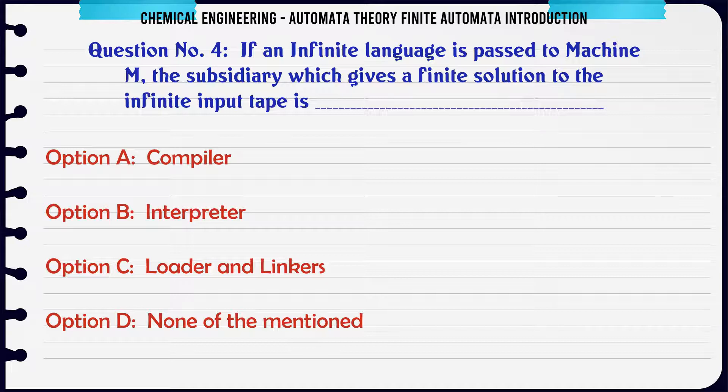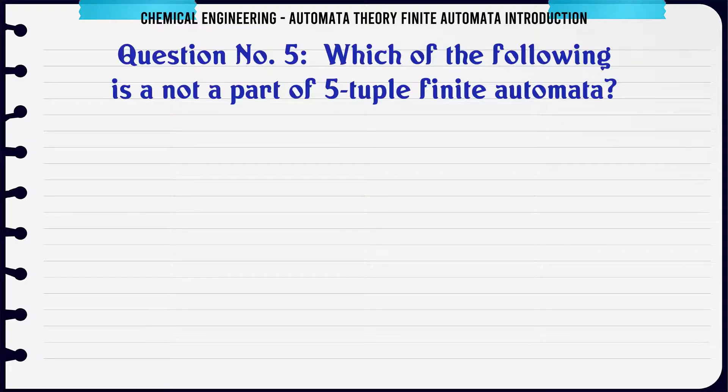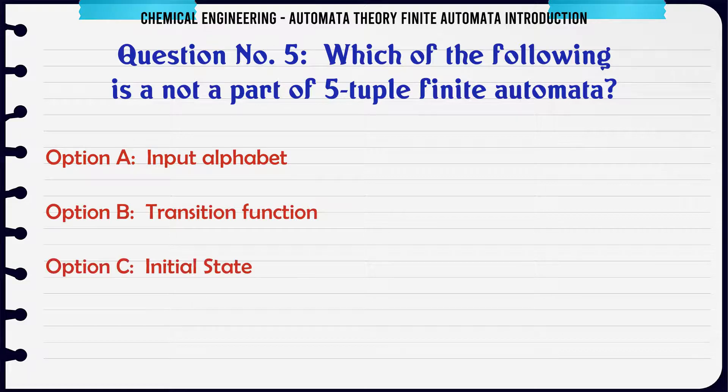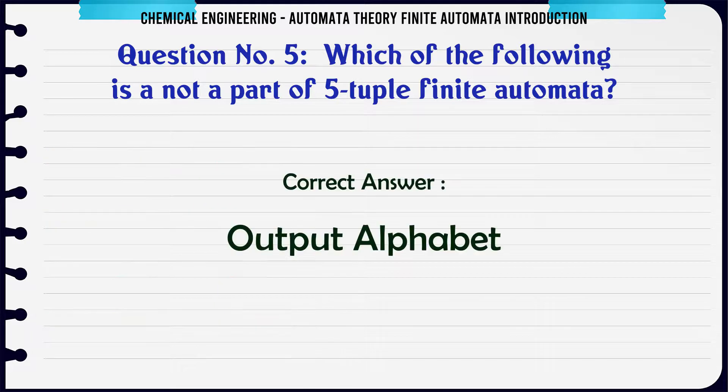The correct answer is Compiler. Which of the following is not a part of 5-tuple finite automata? A: Input alphabet, B: Transition function, C: Initial state, D: Output alphabet. The correct answer is Output alphabet.